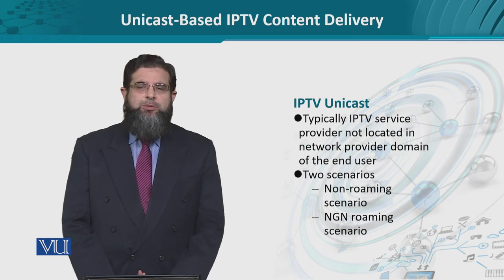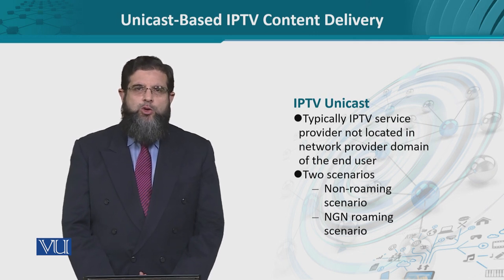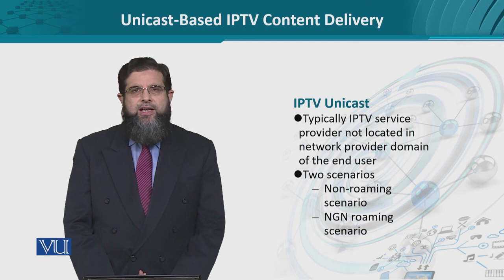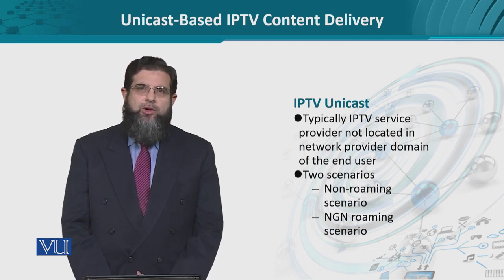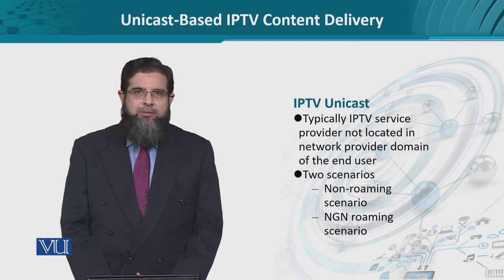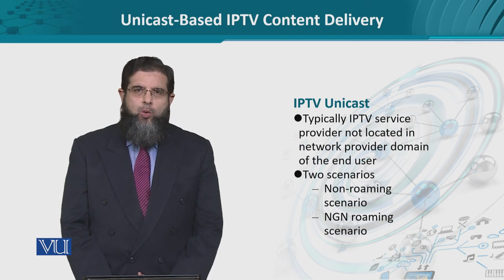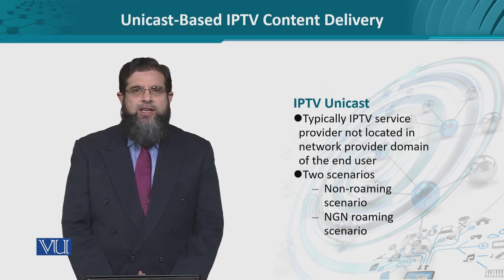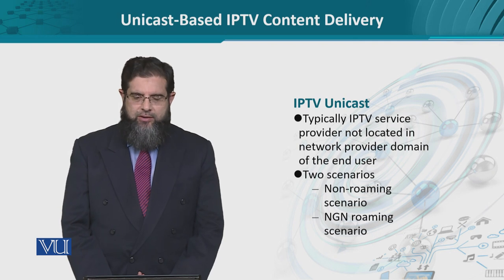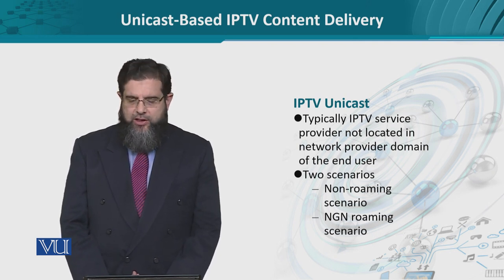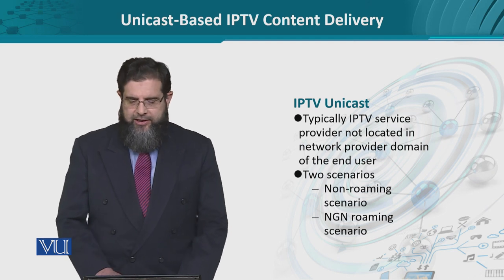IPTV unicasting is the transmission of content from one content provider to one content seeker. IPTV services are provided to a variety of users coming from different NGNs, so there is a requirement that certain functional elements be identified, which would be either activated or not activated depending upon where the user is located. Because content can be distributed across many NGN service providers, we need to understand how two scenarios are independently handled.